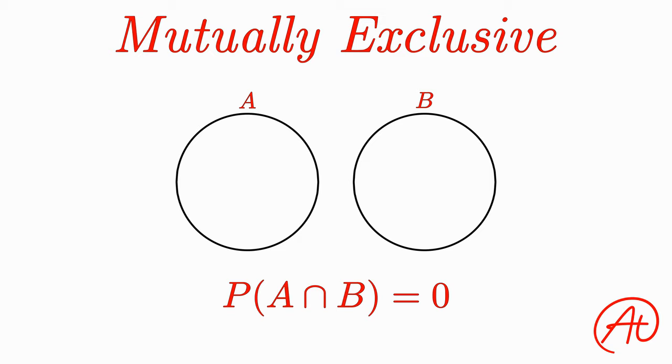A good example of this comes in the form of flipping a coin. If we were to make one event flipping heads and the other event flipping tails, each event has a probability of 0.5, and they have no intersection because there's no possible way to flip a coin and have it land as both heads and tails. Therefore, these two events are mutually exclusive.